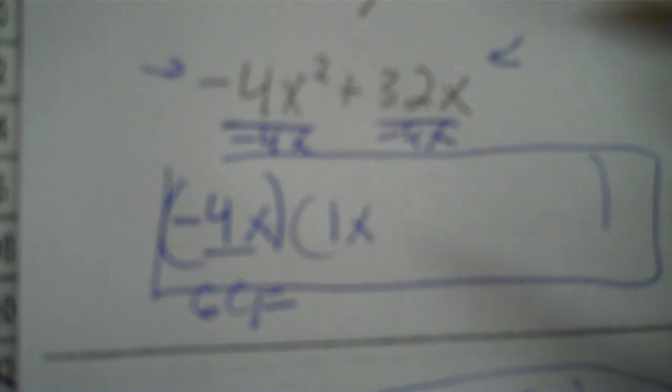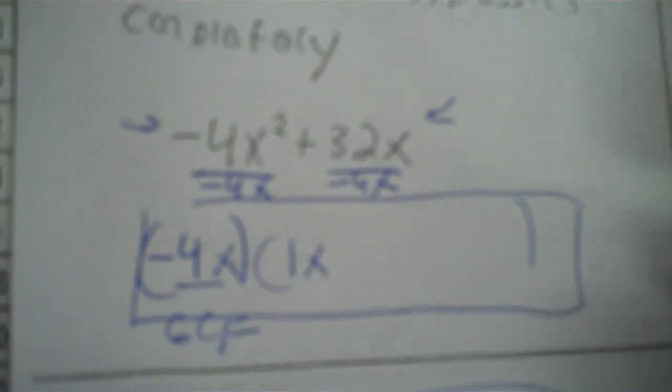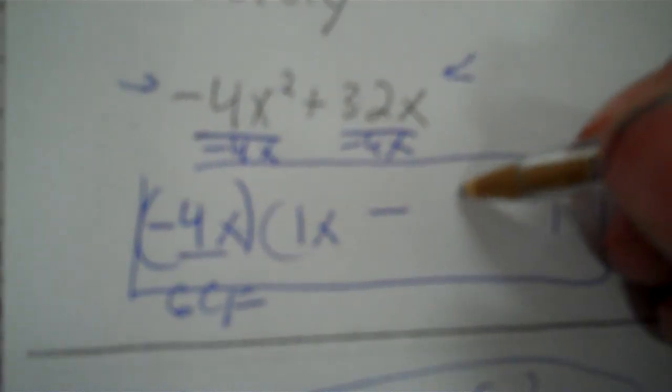Negative 4 divided by negative 4 is 1. We have an x under the line, so we divide x squared by x. Cancel that and you still have an x — put an x alongside the 1. Then positive 32 divided by negative 4 is negative 8. The x divided by x gives us a wipeout, so no x on the 8.